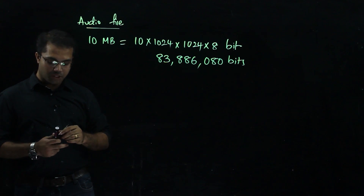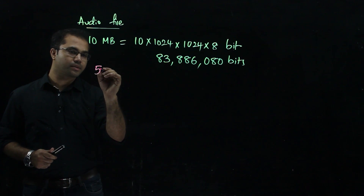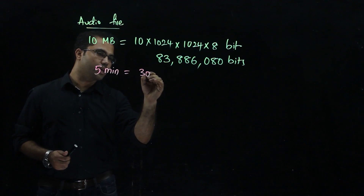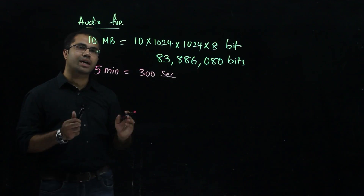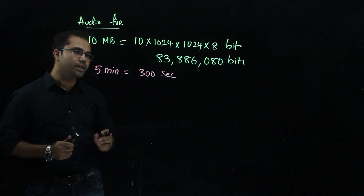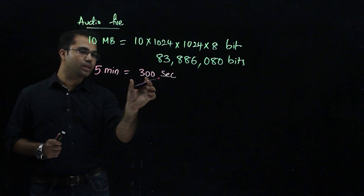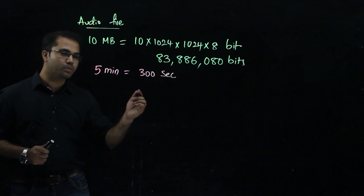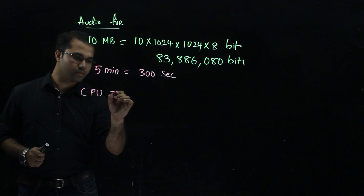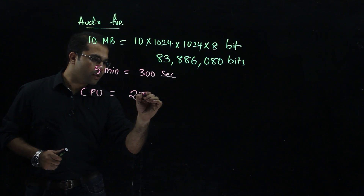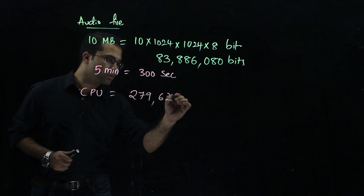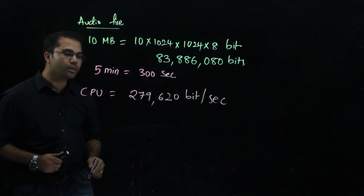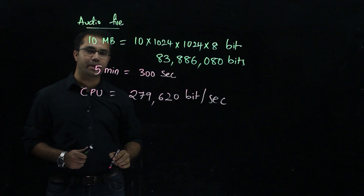Similarly, we can take the duration of this audio file as 5 minutes, which is 300 seconds. This means the CPU must execute this audio file within 5 minutes — that is, 83,886,080 bits must be executed within 300 seconds, which means the computation is almost 279,620 bits per second. The CPU has to execute 279,620 bits per second.